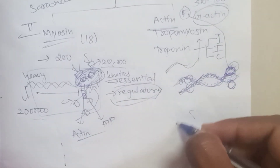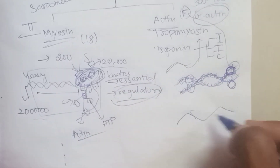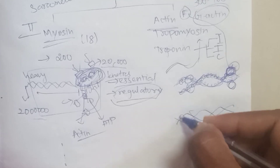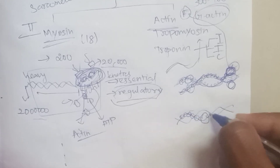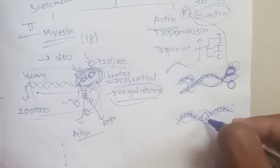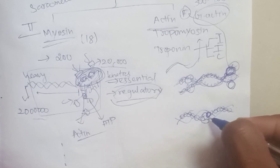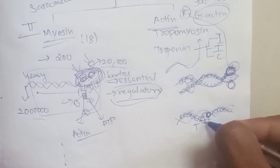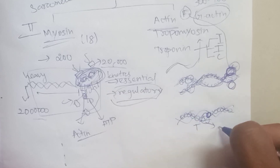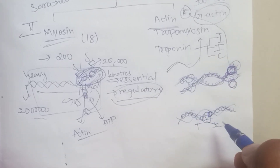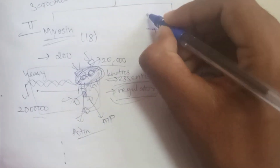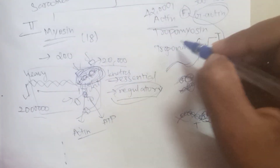So tropomyosin wraps around F-actin, and troponin sits on tropomyosin. Troponin I binds F-actin, troponin T is the helix that binds tropomyosin, and troponin C binds the calcium ion. These are the three parts of troponin. F-actin has a molecular weight of 42,000 and tropomyosin has a molecular weight of 70,000.